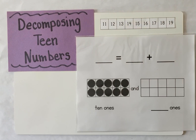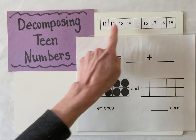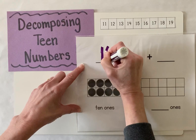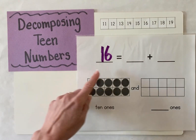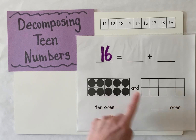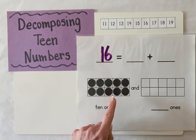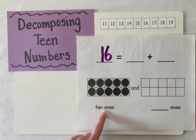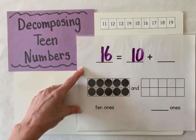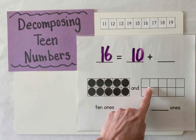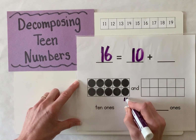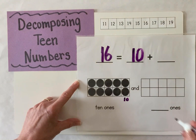First, we're going to begin using 10 frames. I'm going to choose a teen number and write it here. That number is 16. So now I'm going to show the number 16 using my 10 frames, and we're going to decompose it — break it into two parts. My first part is going to be my 10 ones, and I represent 10 ones with the number 10. Then I need to look at the second part of my number — how many more do I need to make 16? Let's count up from 10 to 16 and see how many dots we get.